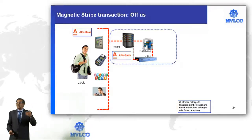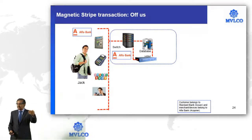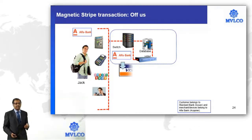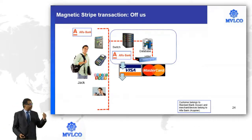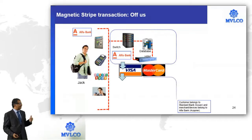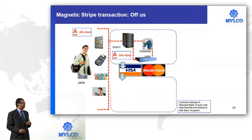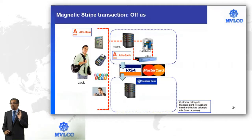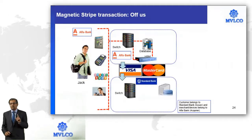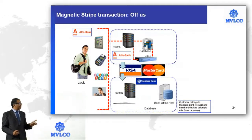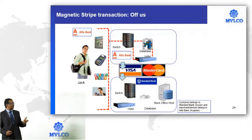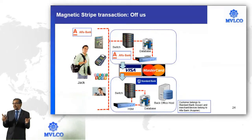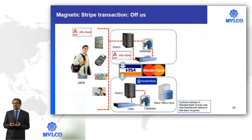The network will understand to which issuer the issuer identification number belongs. We look at the issuer identification number and understand that this card belongs to Standard Bank. We forward that message onwards to Standard Bank. Standard Bank would now do the same process it did for the on-us transaction — they authenticate Jack and his card.